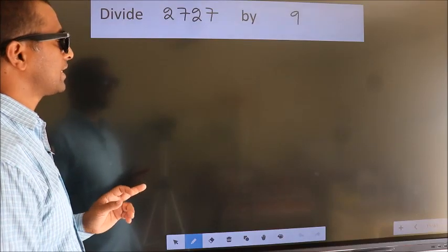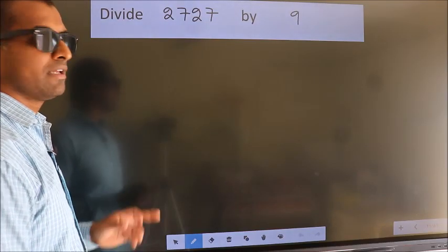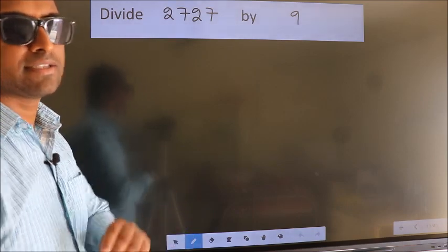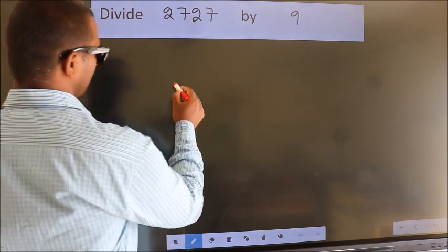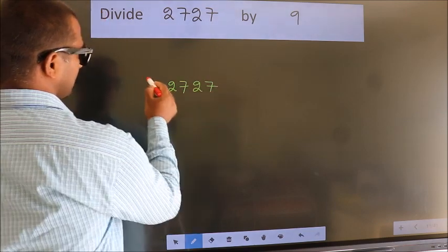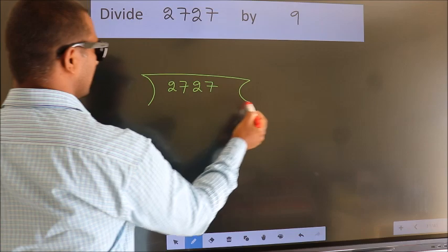Divide 2727 by 9. To do this division, we should frame it in this way. 2727 here, 9 here.